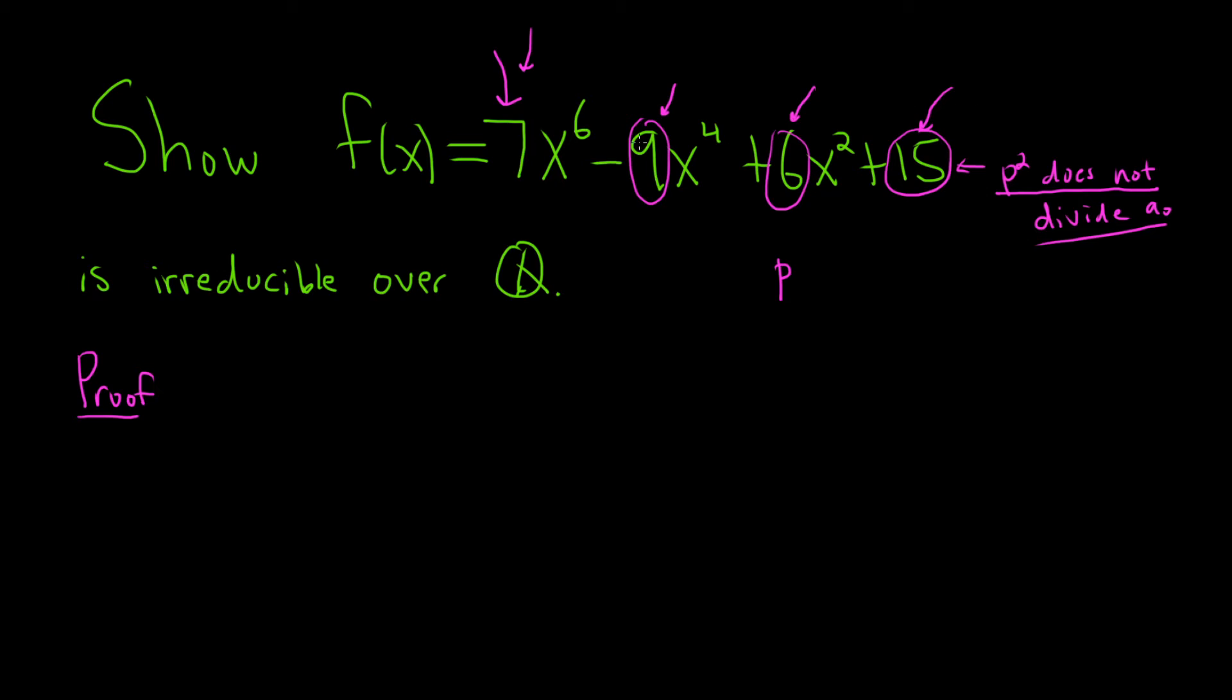So, what prime will divide these three that I have circled? Well, it looks like three, right? Three will divide each of these. It doesn't divide the seven, so that takes care of that condition. And p squared is nine, and that doesn't divide the 15, so this should be irreducible by Eisenstein's criterion.